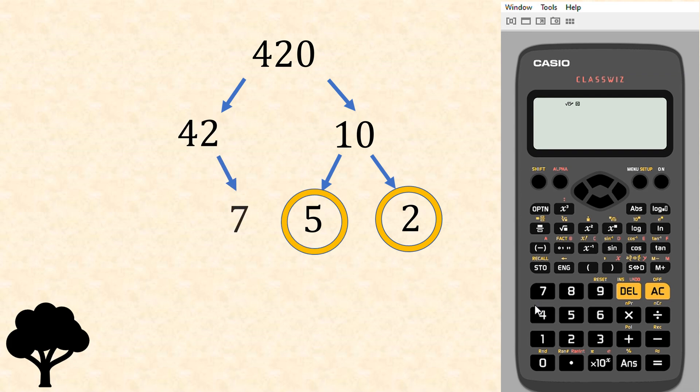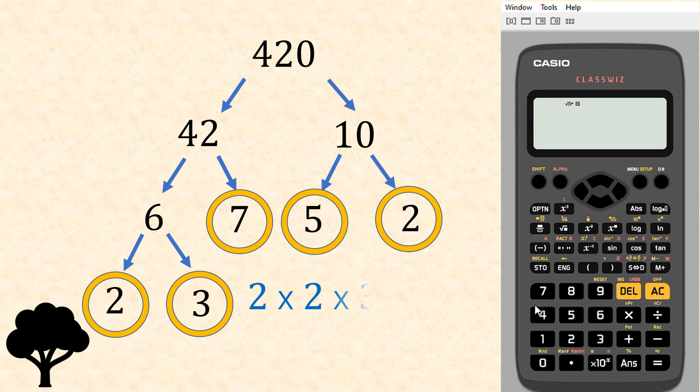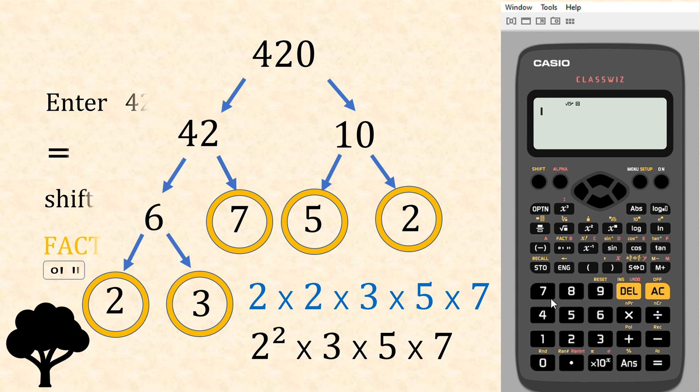Over to the 42, this can be divided by 7, and this goes in 6 times. Now 7 is a prime factor, so we need to continue on with the 6. 6 can be divided by 2, and that goes in 3 times. So that gives us all the prime factors. We would write it out like 2 times 2 times 3 times 5 times 7, and then we would simplify that as 2 to the power of 2 times 3 times 5 times 7.